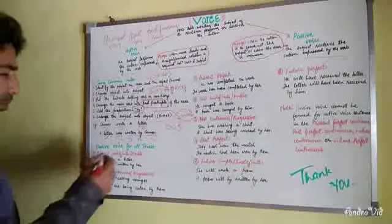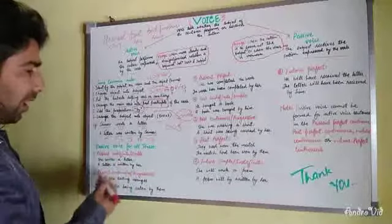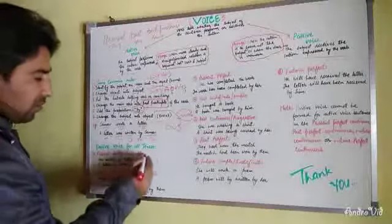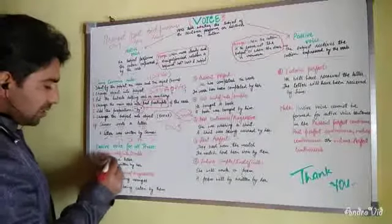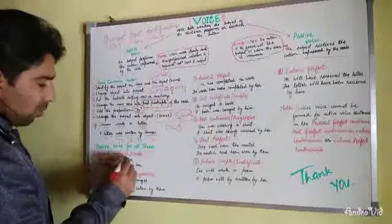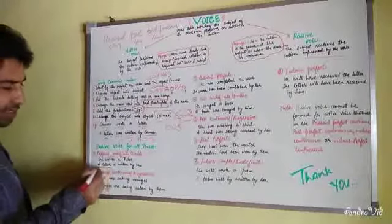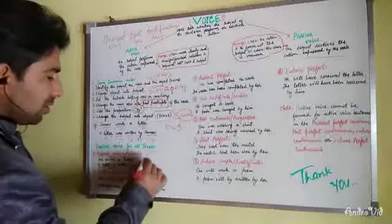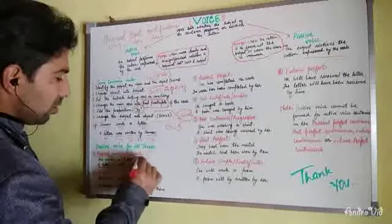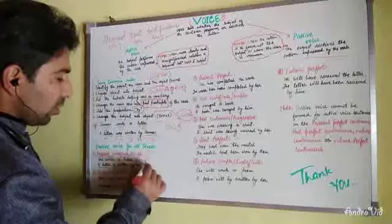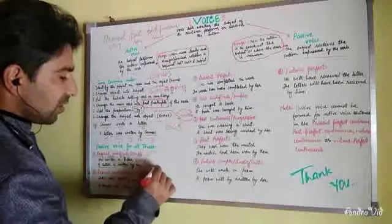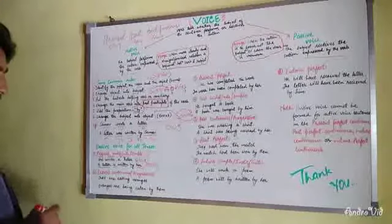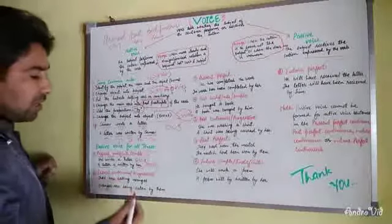Now I'll tell you how the tenses are changed for passive voice across all tenses. First, present indefinite or simple present: 'She writes a letter' — S + V + O becomes O + V + S in passive: 'A letter is written by her.' You add the helping verb 'is,' use the past participle form of the verb, and add the preposition 'by' followed by the subject.